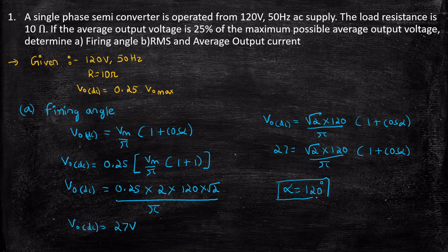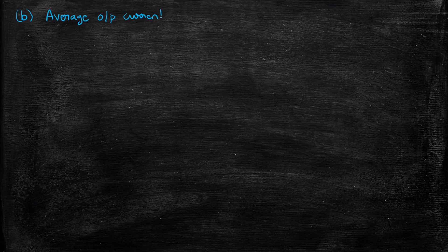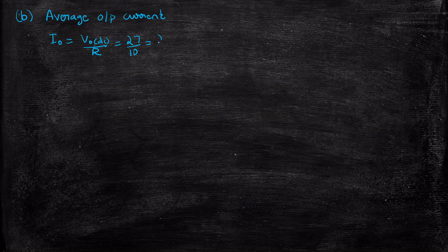Now we have to find the RMS and average output current. Since this is an R load, average output current is nothing but Vout_average / R. That is 27 / 10, giving 2.7 amps.